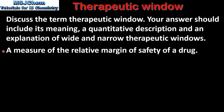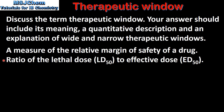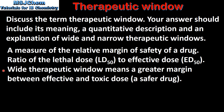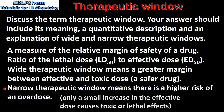The therapeutic window is a measure of the relative margin of safety of a drug. It is the ratio of the lethal dose to the effective dose. A wide therapeutic window means a greater margin between effective and toxic dose, which means a safer drug. A narrow therapeutic window means there is a higher risk of an overdose.